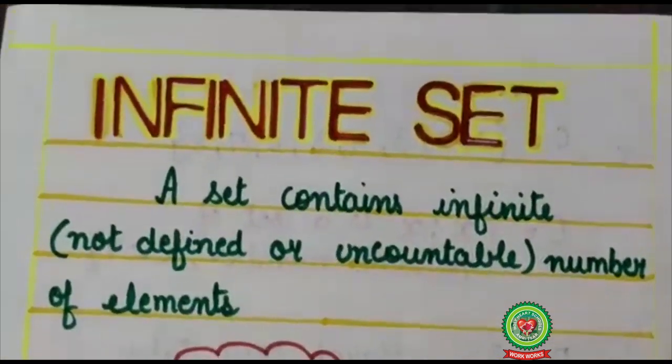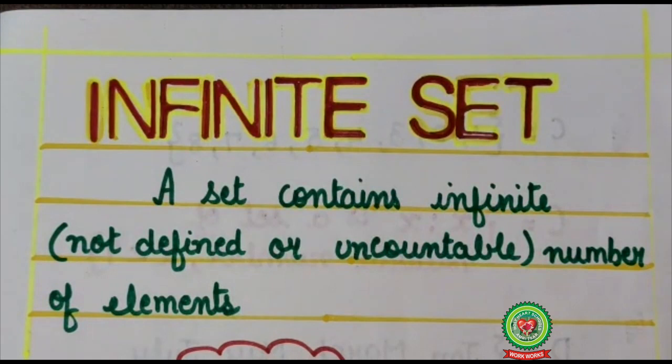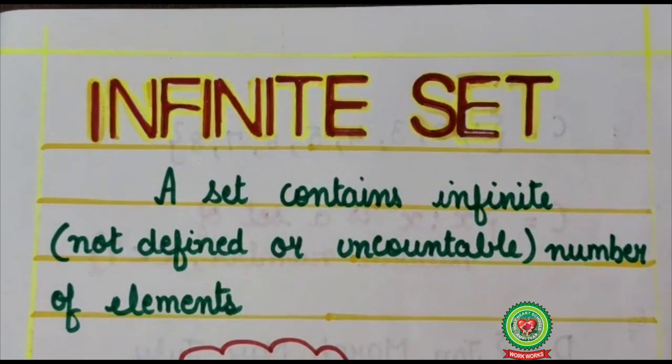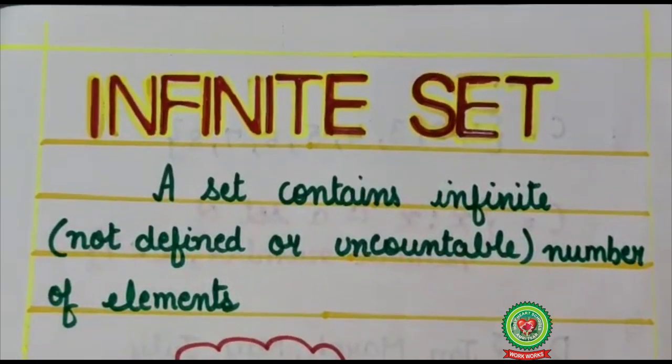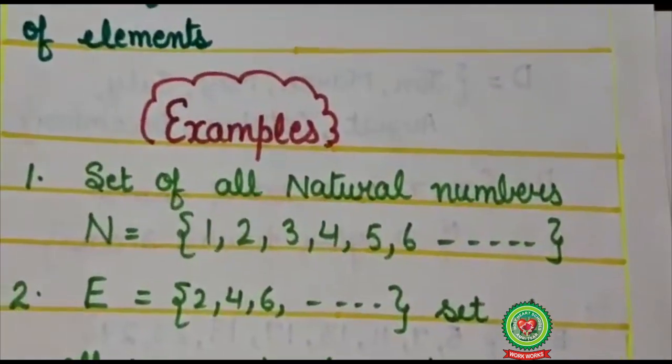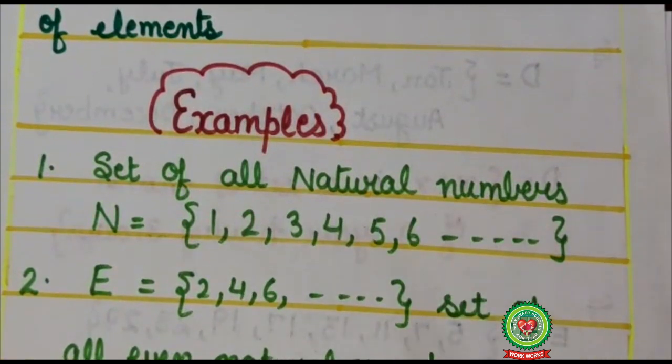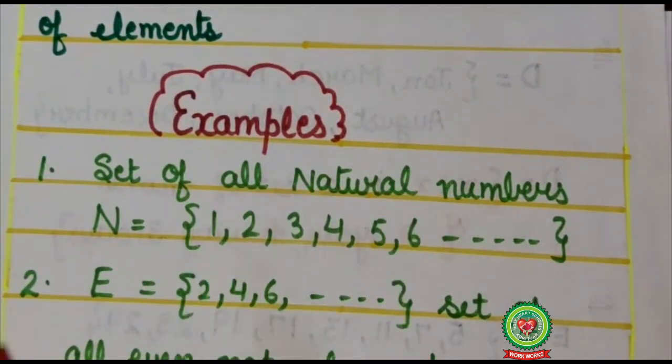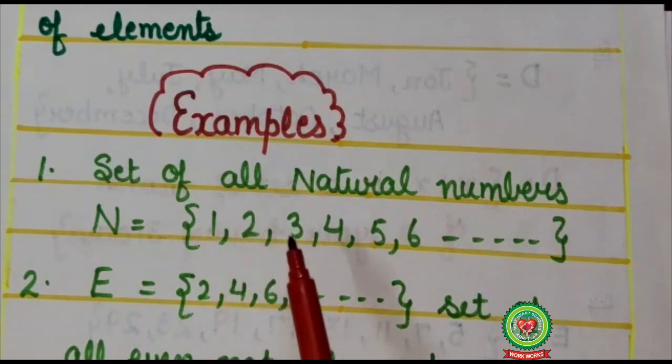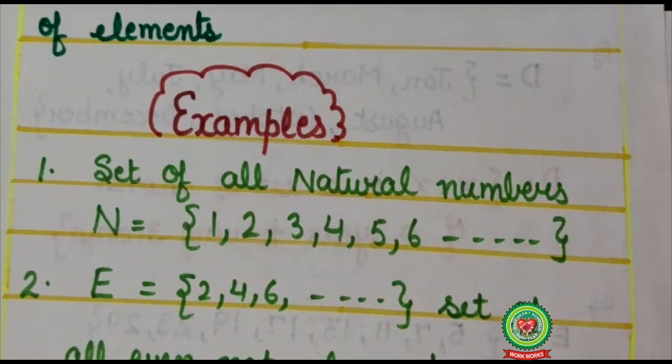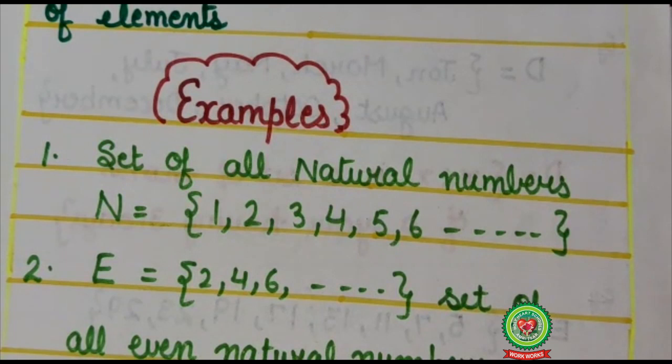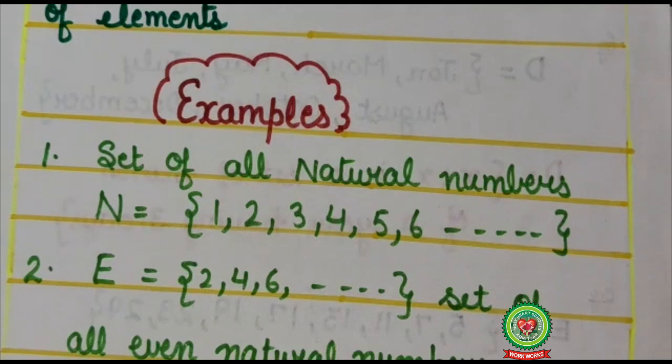Now come to the next sets. These are infinite sets. A set contains infinite or uncountable number of elements. Let's understand with examples. Here I am having set of natural numbers, all natural numbers. Now capital N stands for natural numbers. Here natural numbers start from 1, 2, 3, 4, 5, 6, and so on. These dots indicate that listing is endless. That means we go on adding 1 to any natural number to get the next one and this process will never come to an end. Therefore, N is an infinite set.